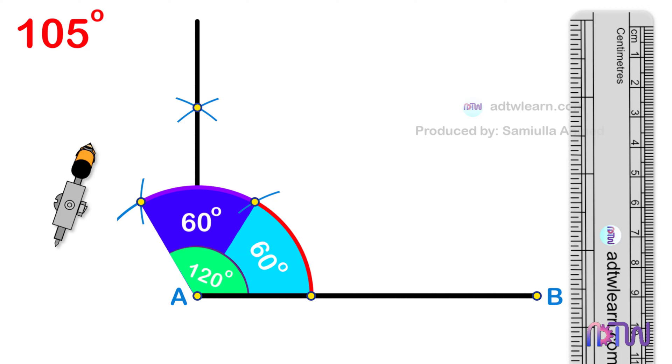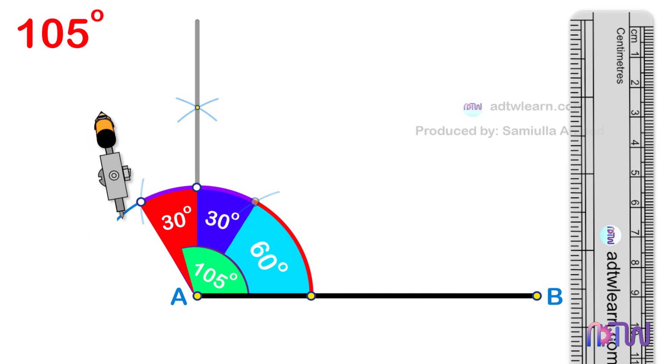Half of this 60 degree will be 30 degrees. But we need 105 degrees. To get 105 degrees we need to divide this 30 degrees in half. To do so, take a compass and using these points as centers, cut arcs as shown.